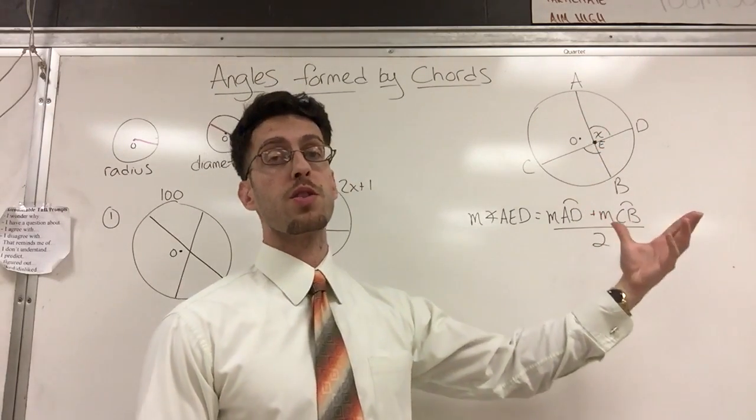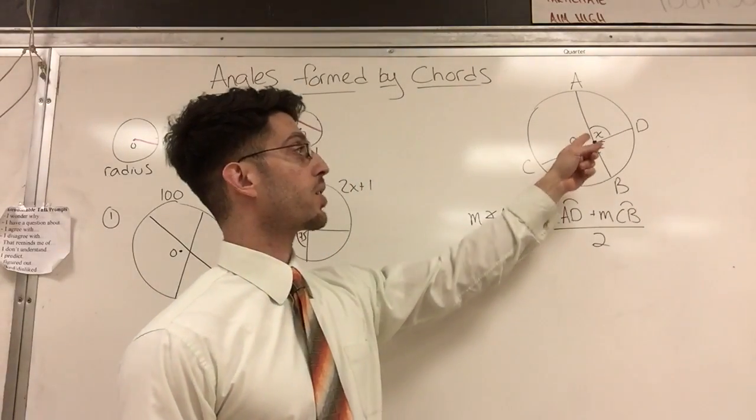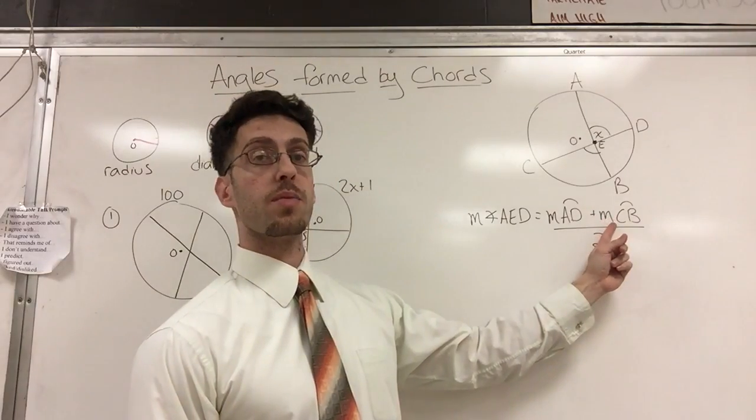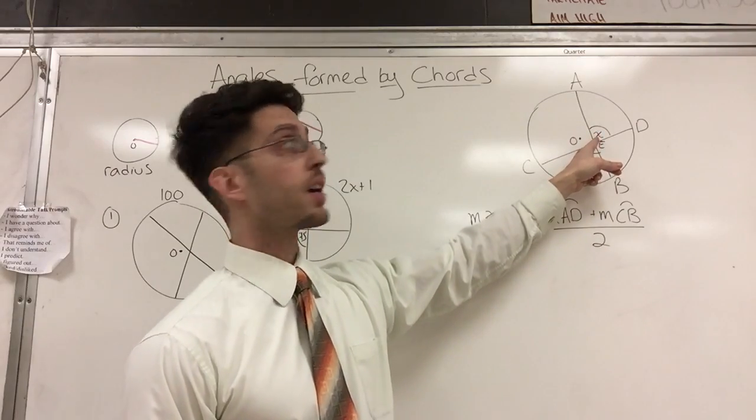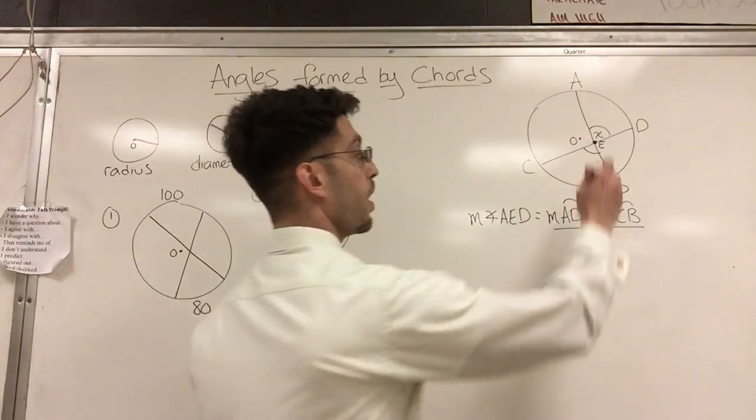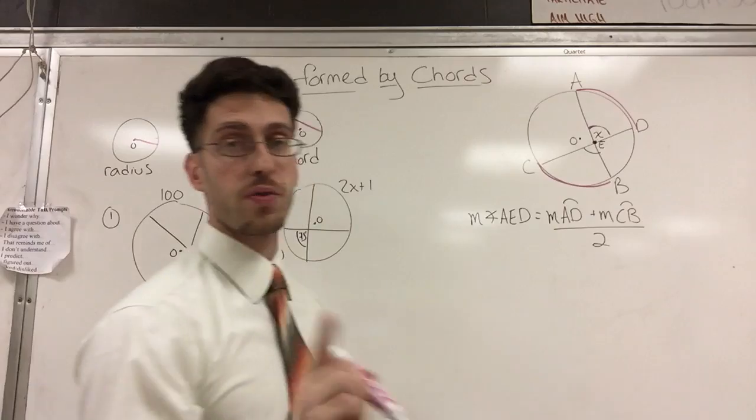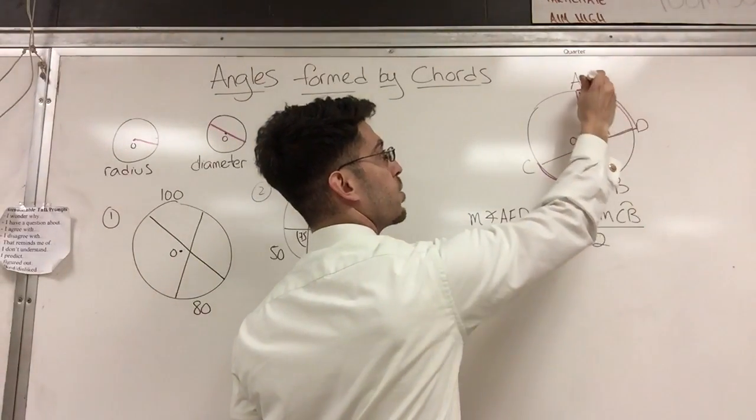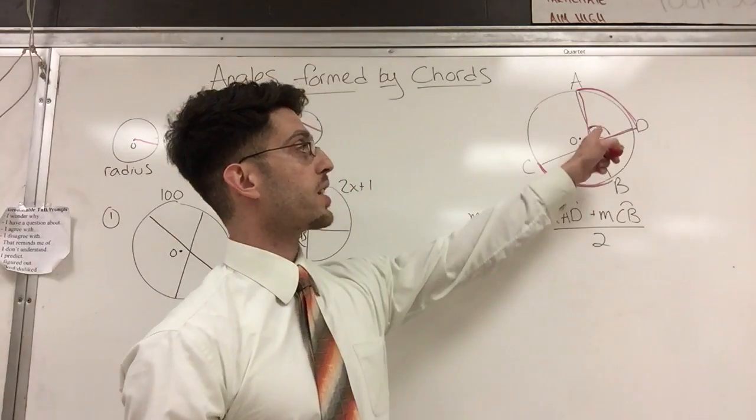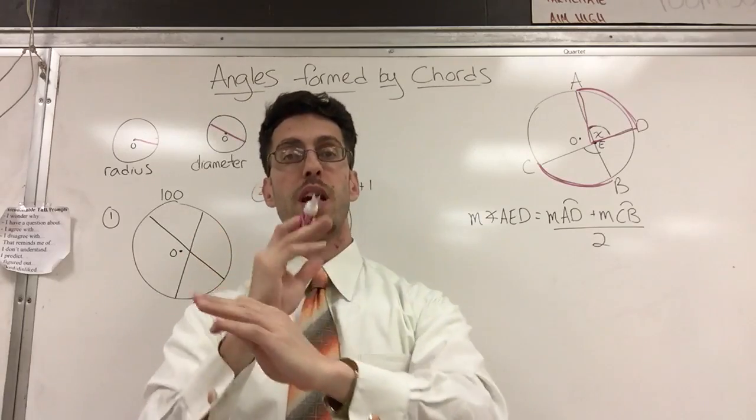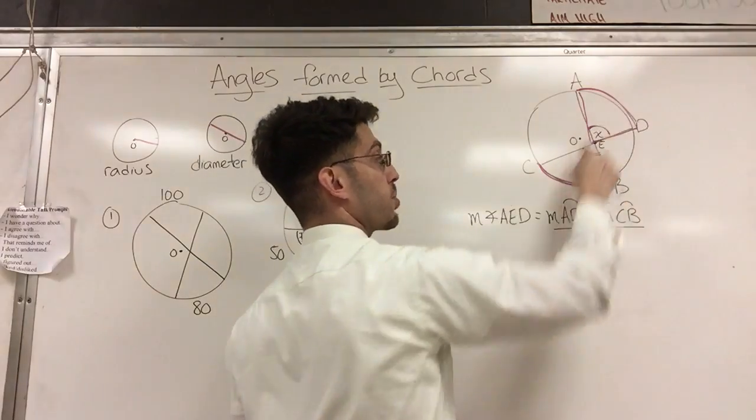So in order to find the measure here, it's not like a central angle. If it was a central angle, it's easy - the angle is equal to the intercepted arc. Here, the angle is equal to the sum of the intercepted arcs divided by two. So measure of angle AED, which is this angle X, is equal to the sum of arc AD and arc CB. So this angle, which is formed by AED, is equal to this plus this divided by two.